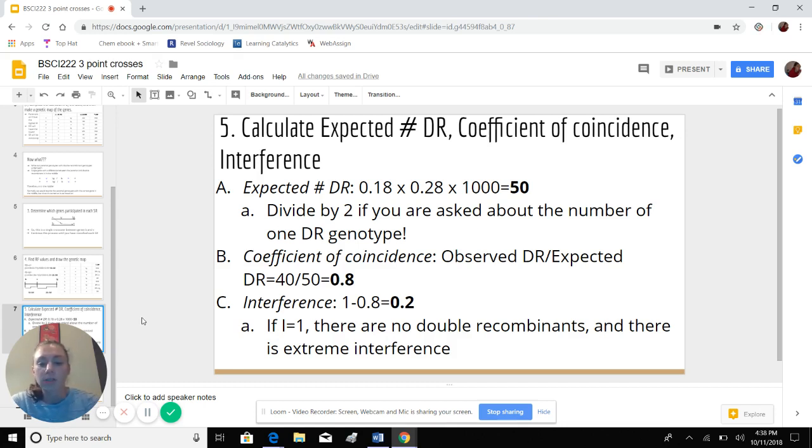And to calculate the coefficient of coincidence, that calculation is the observed double recombinants divided by the expected double recombinants. So in this case, we see 40 double recombinants. That's the values that we are given. And we just calculated that the expected number is 50. And we divide these two and get 0.8.